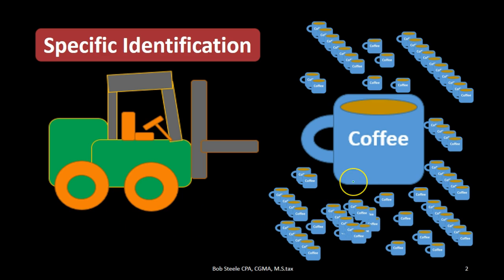If we're selling something else like coffee mugs, we may have a large amount of them, they may all be completely the same, and therefore giving them all identification numbers and trying to track exactly which mug we sold and the cost of that particular mug may not be a good use of our time. It may be better to use some type of estimating method — first in first out, last in first out, or an average method.